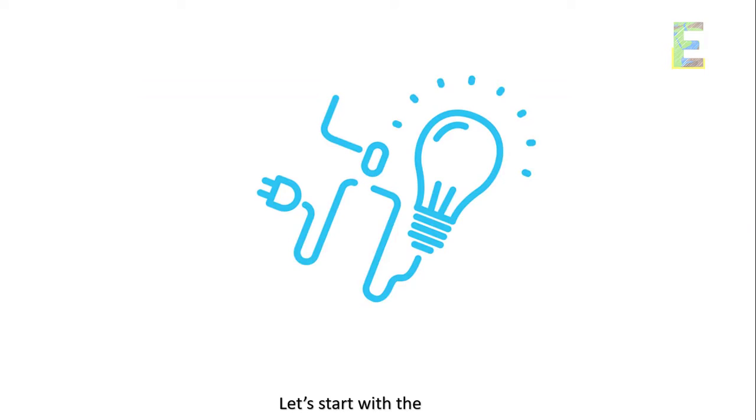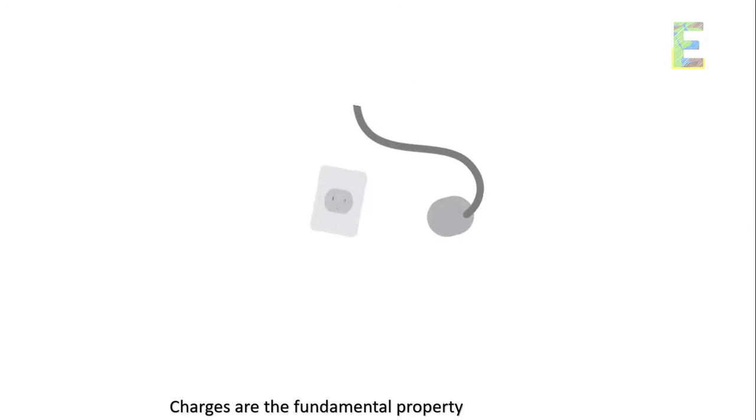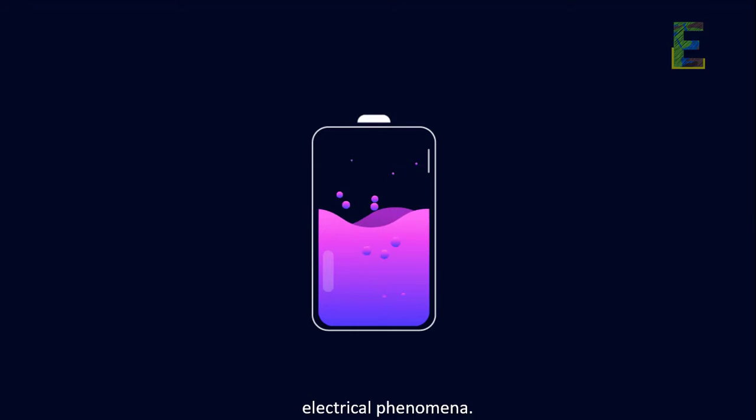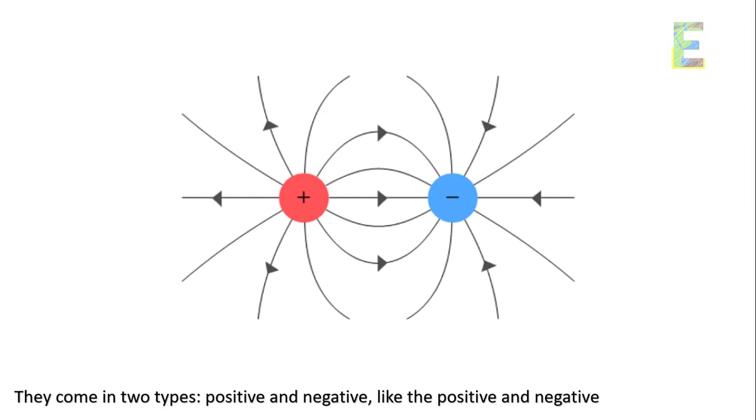Introduction to charges. Let's start with the basics. Charges are the fundamental property of matter that create electrical phenomena. They come in two types, positive and negative, like the positive and negative ends of a magnet.